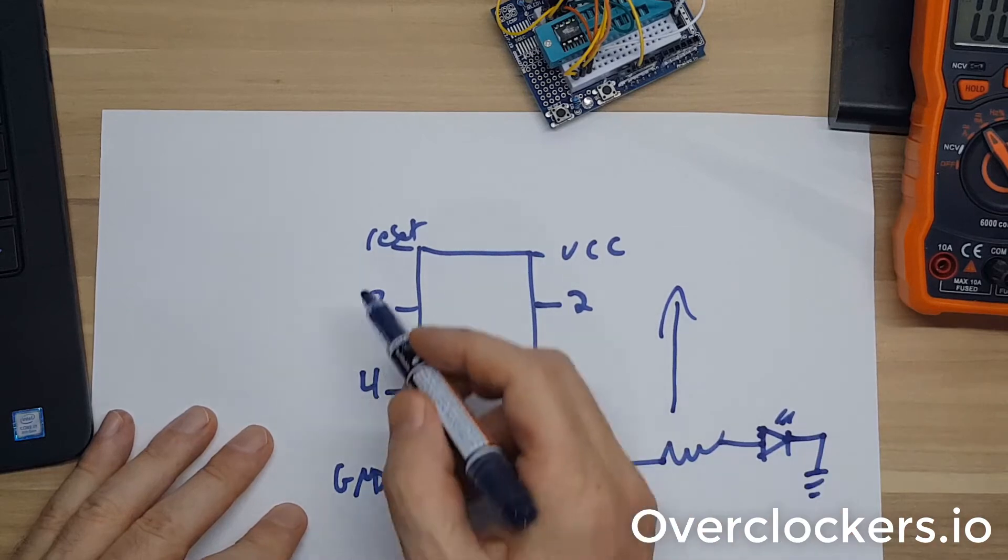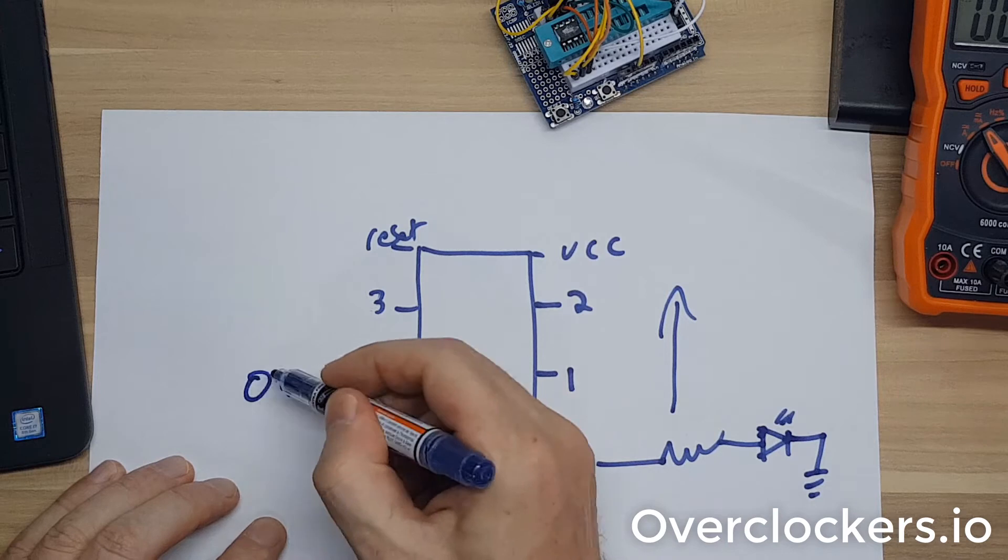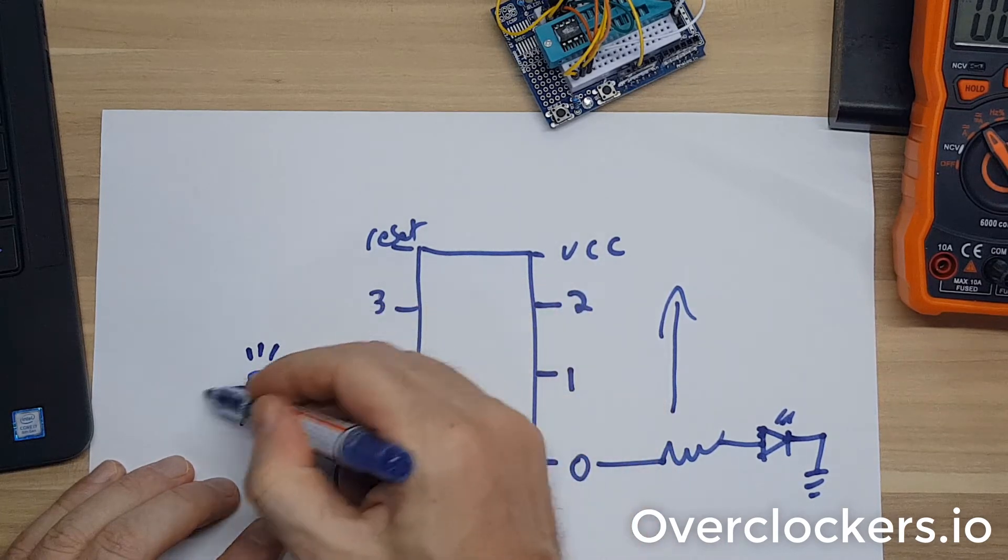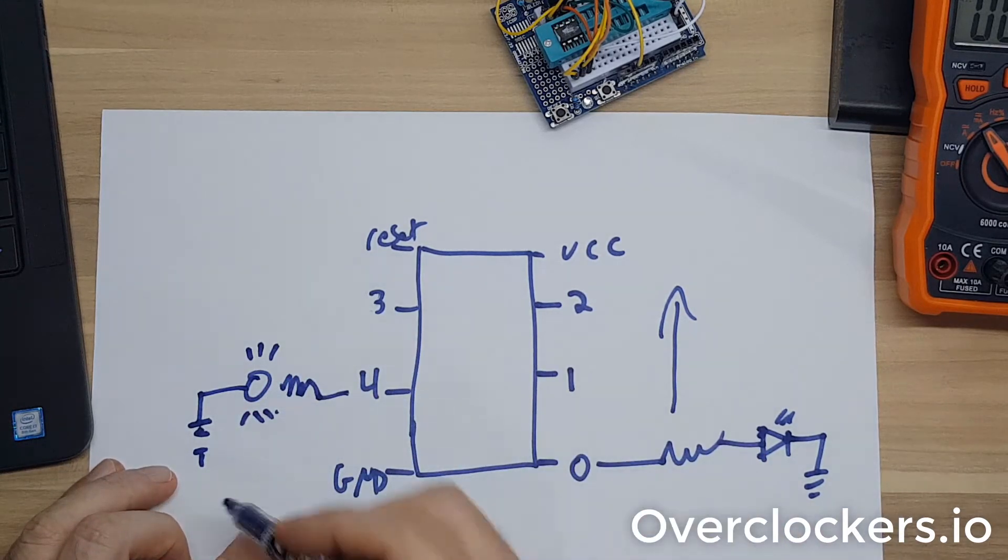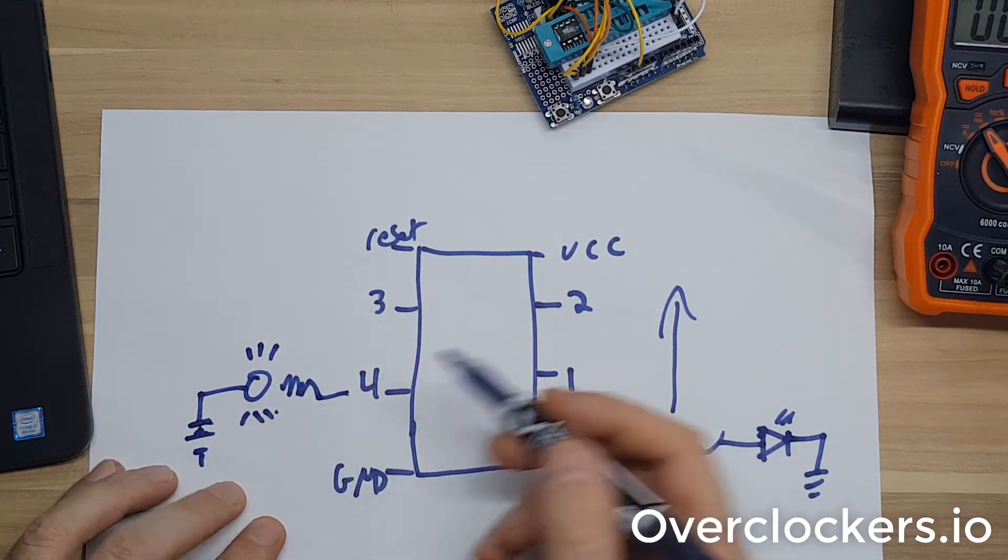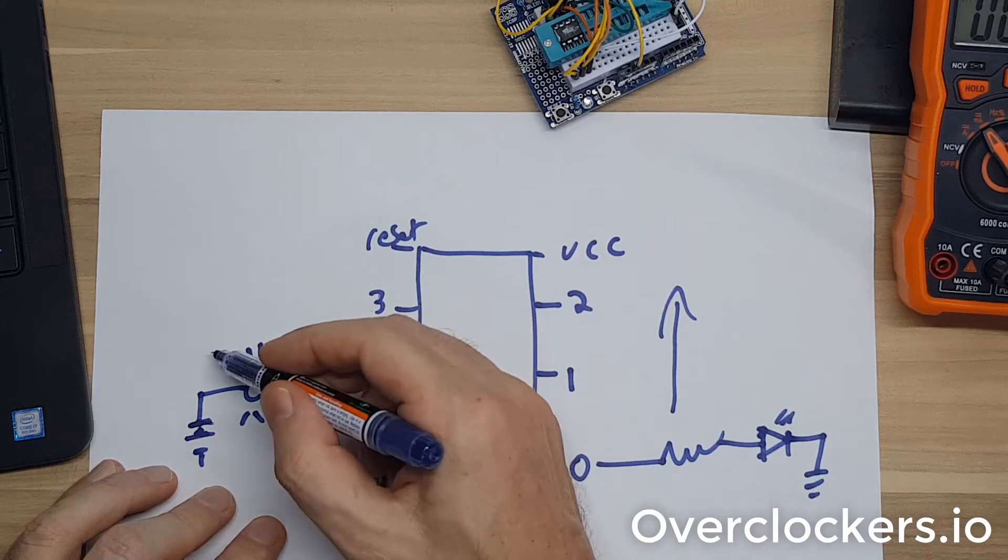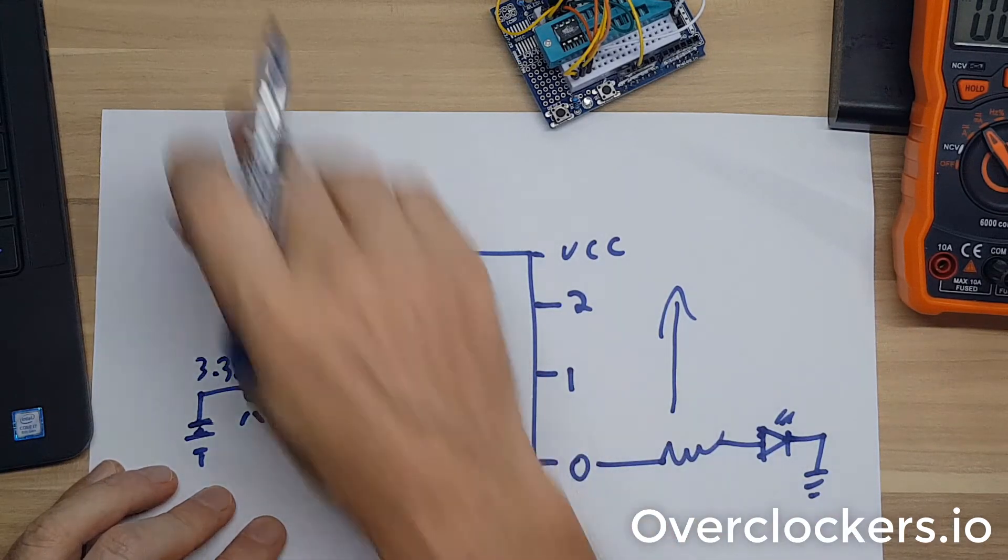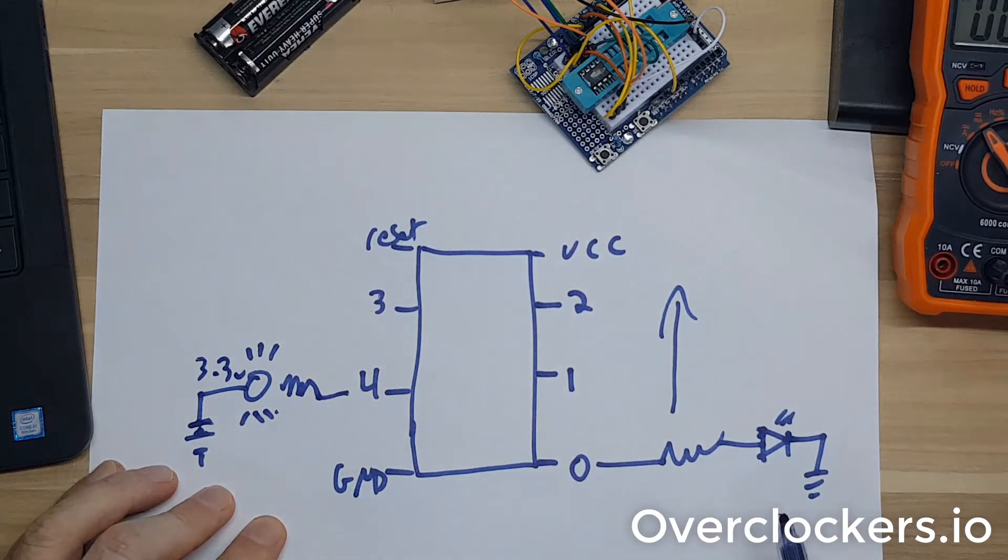Over here we have the buzzer, again on a resistor. You may not need the resistor depending on the voltage. In this case, my piezo buzzer is a 3.3 volt piezo buzzer, so using these two AA batteries is only three volts, so it's fine.